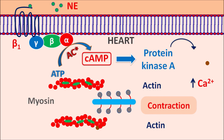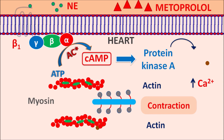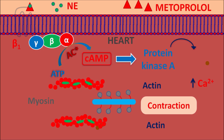Metoprolol acts as an antagonist at beta-1 receptors, binding to and inhibiting their activity, thereby inhibiting cardiac contraction. Both rate and force of contraction are reduced, resulting in decreased cardiac output, decreased cardiac work, and increased cardiac efficiency. This is why metoprolol is useful in cardiovascular disorders like cardiac arrhythmias, angina, hypertension, and even at low doses in the treatment of heart failure.